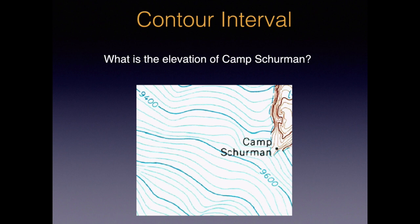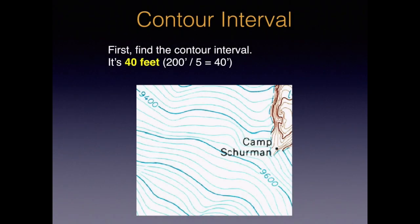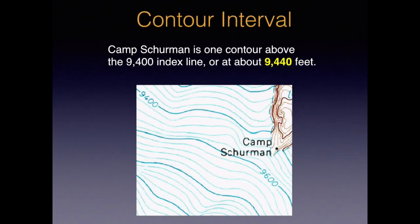Once you know what the contour interval is, you can find the elevation of any point on your map. What's the elevation of Camp Sherman? Pause the video here if you want and take a minute to answer. First, we need to find the contour interval — here it's 40 feet; 200 feet between the index lines divided by 5 gives us the interval. Looking below the camp, we see the nearest index contour is 9,400 feet. We count contour lines going up until we reach the camp — it looks like there's 1. Knowing that the interval is 40 feet, we add 40 to the index contour of 9,400 to get an approximate camp elevation of 9,440 feet. Another way to think of it: 5,000 more feet to the top.